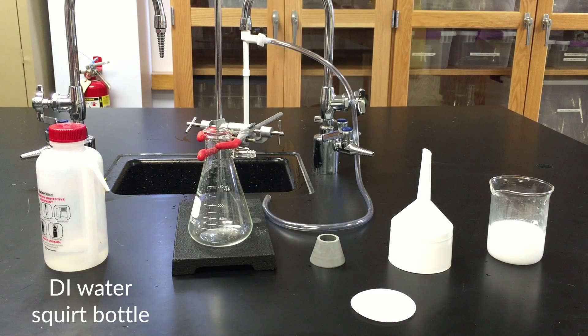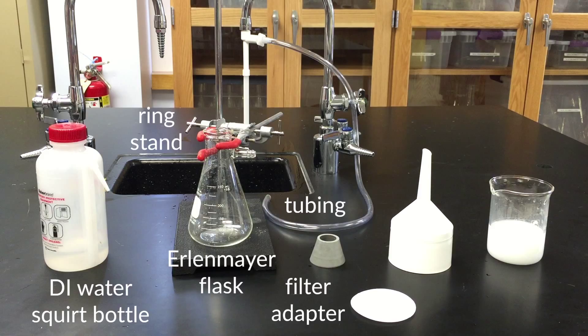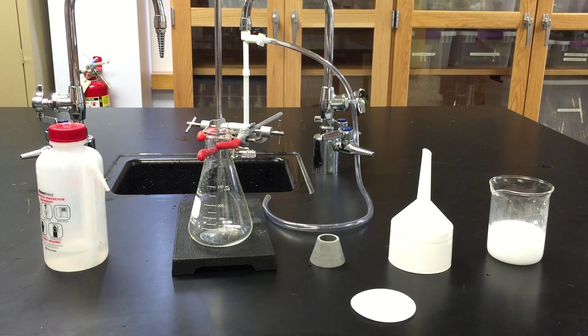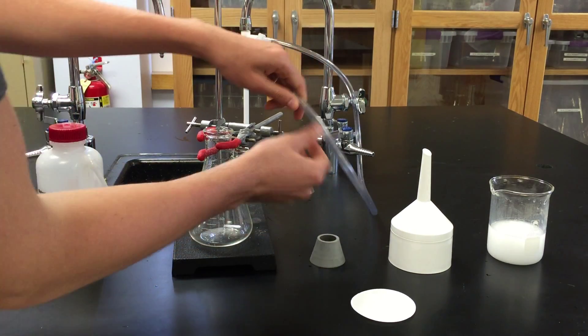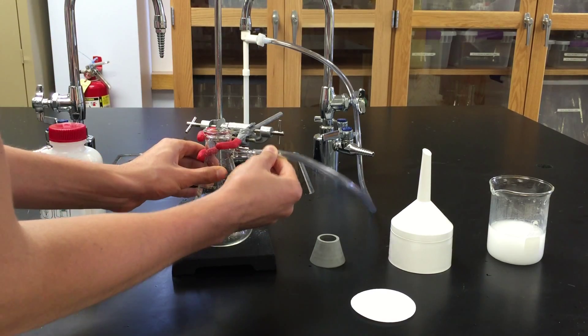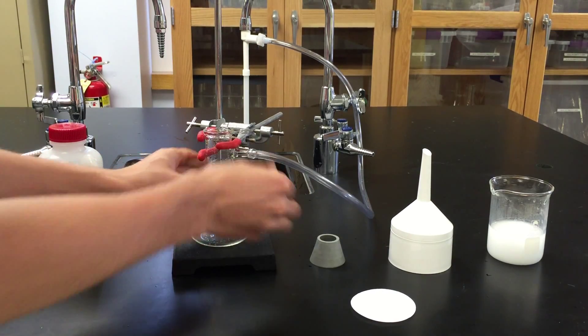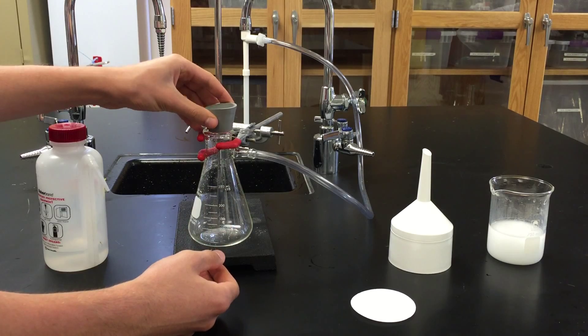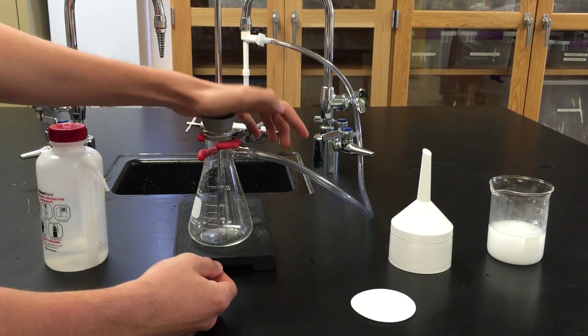For a filtration, you need water, a ring stand, a sidearm Erlenmeyer, tubing, a filter adapter, filter paper, a Buechner funnel, and your solution. First attach your tubing to the arm of the Erlenmeyer flask. Then place the filter adapter in the top of the flask and put the funnel on top of that.